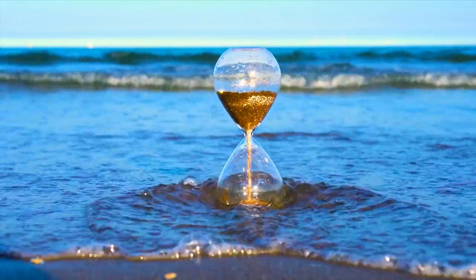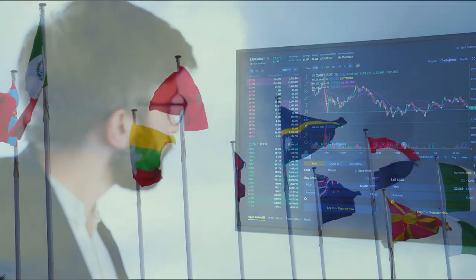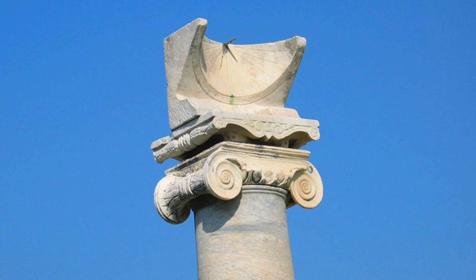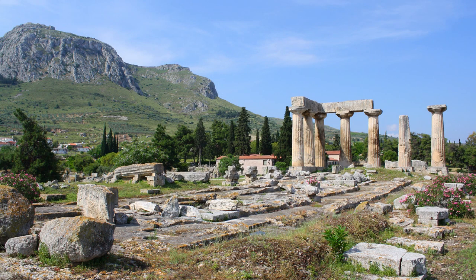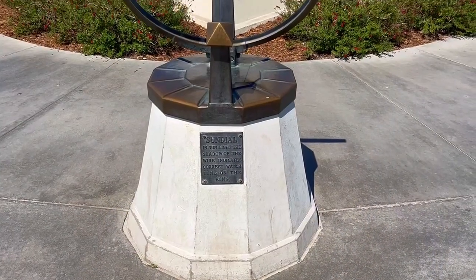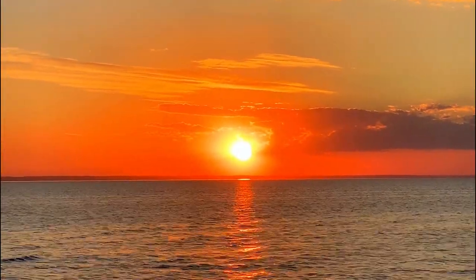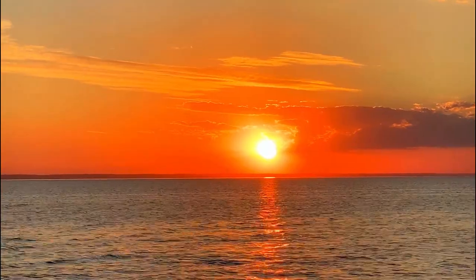Time rules our lives—from daily routines to trade and governance. Sundials, like the ancient Roman version at the Temple of Apollo, offered an early solution. As the sun moved, its shadow on the dial shifted, revealing the hour. Griffith Observatory's sundial works similarly, aligning with the sun's path and telling you the time by where the shadow falls.